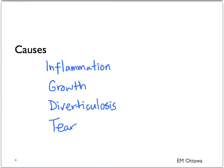Lower GI bleed can be caused by inflammation, growth, diverticulosis, and tear. We'll go through each one of them and how they might present.